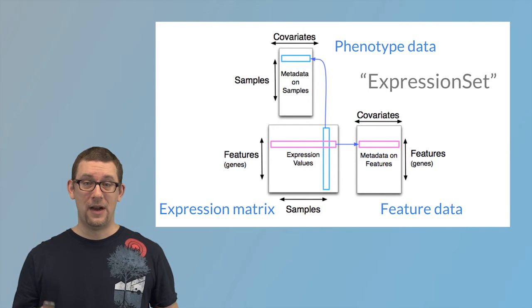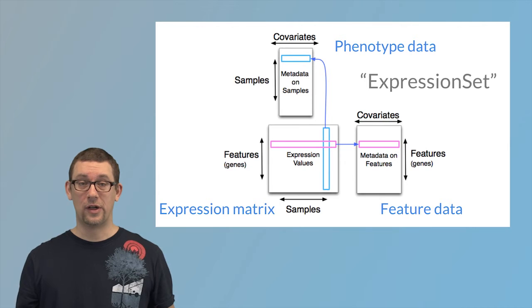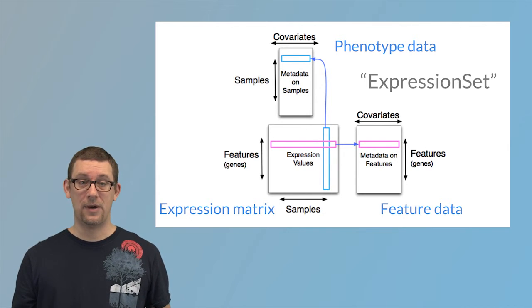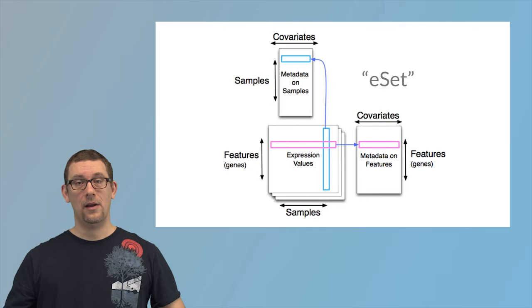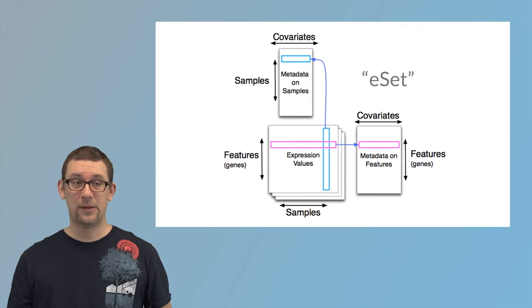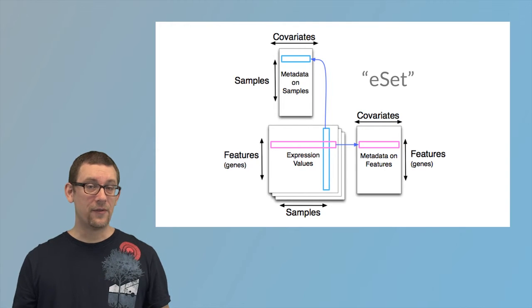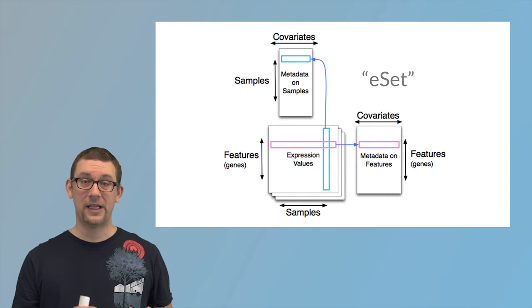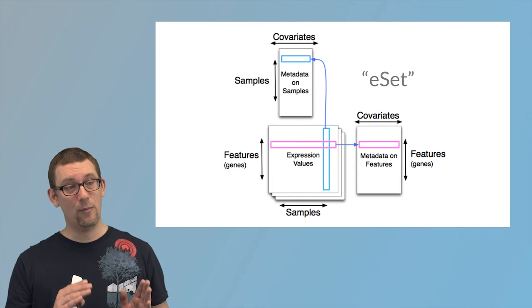This is a very common type of construction in Bioconductor that has proven to be immensely powerful. There is an obvious generalization of the expression set into something called an E set, and the difference between an expression set and an E set is that we don't have a single expression matrix, we have multiple matrices. For example, it could correspond to a two-color microarray experiment, where each matrix is a color of the microarray, or it could correspond to data on DNA methylation, where one matrix corresponds to the methylation channel and the other matrix corresponds to the unmethylation channel.